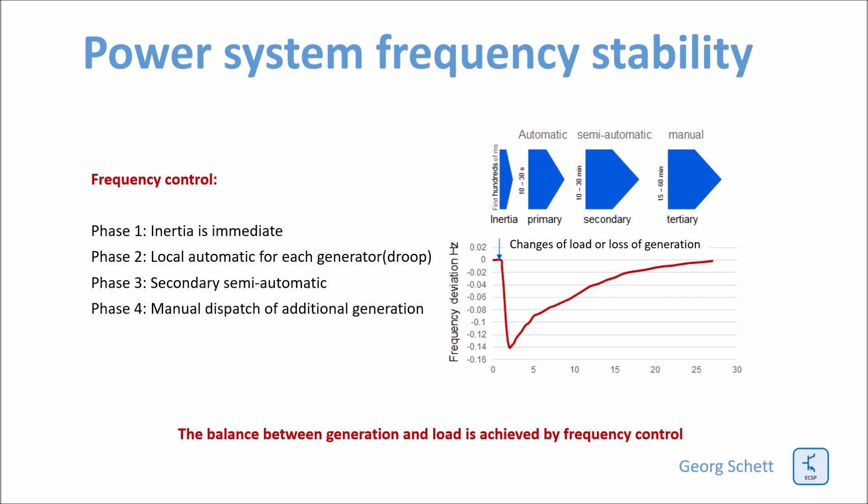In a second phase, there is a very local generation control. It's the so-called droop, which is opening or closing the valves, for example, of steam engines or of hydropower plants.